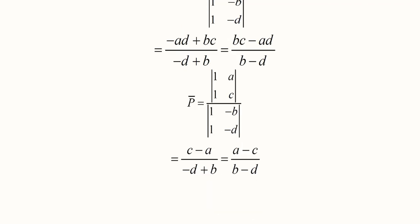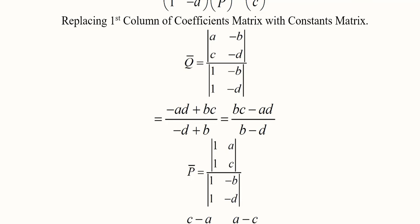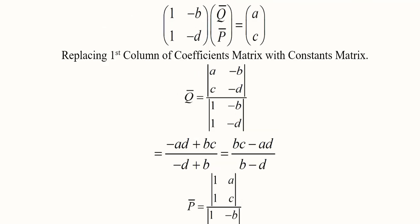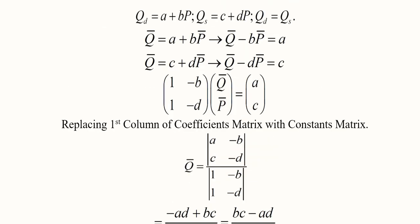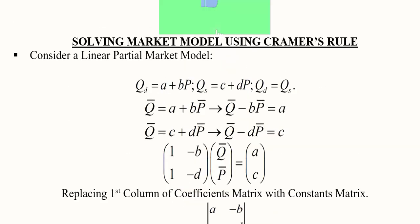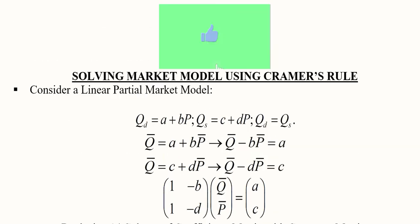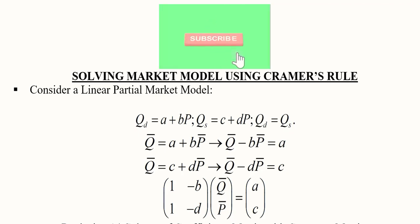In this way we have found the equilibrium price and equilibrium output using the Cramer's rule approach to solve the market model. Thank you.